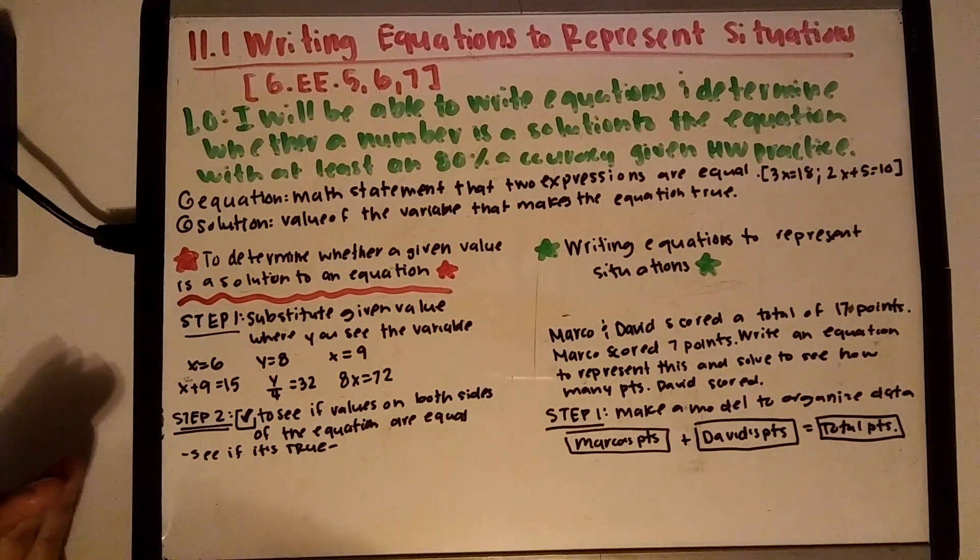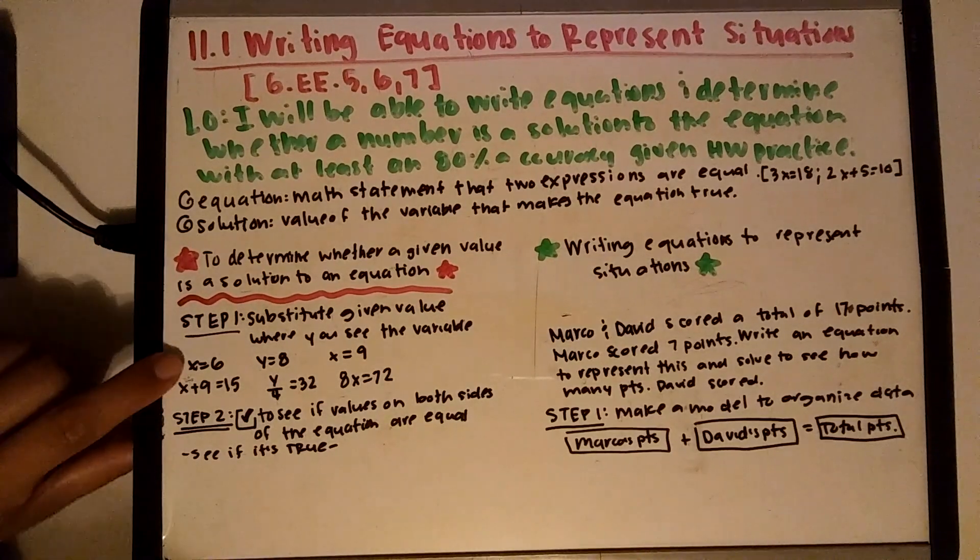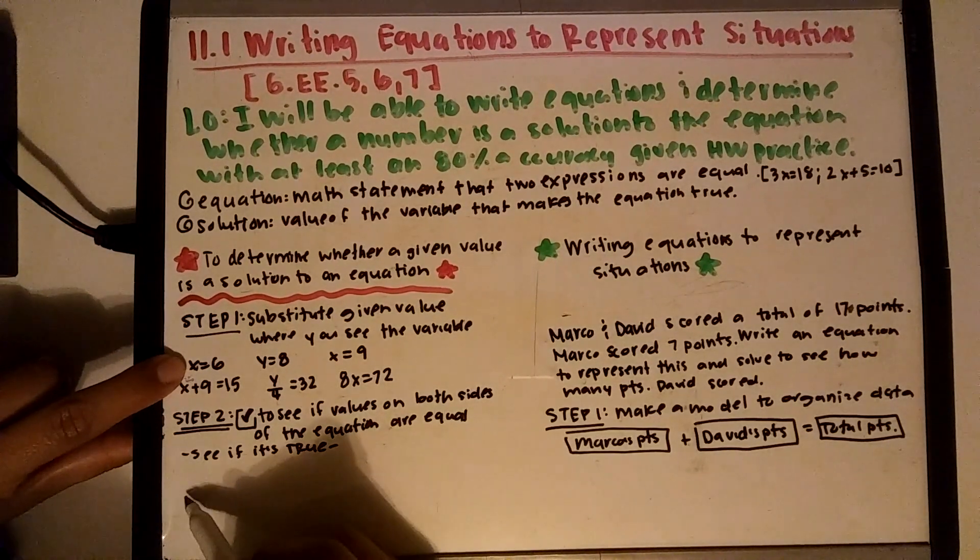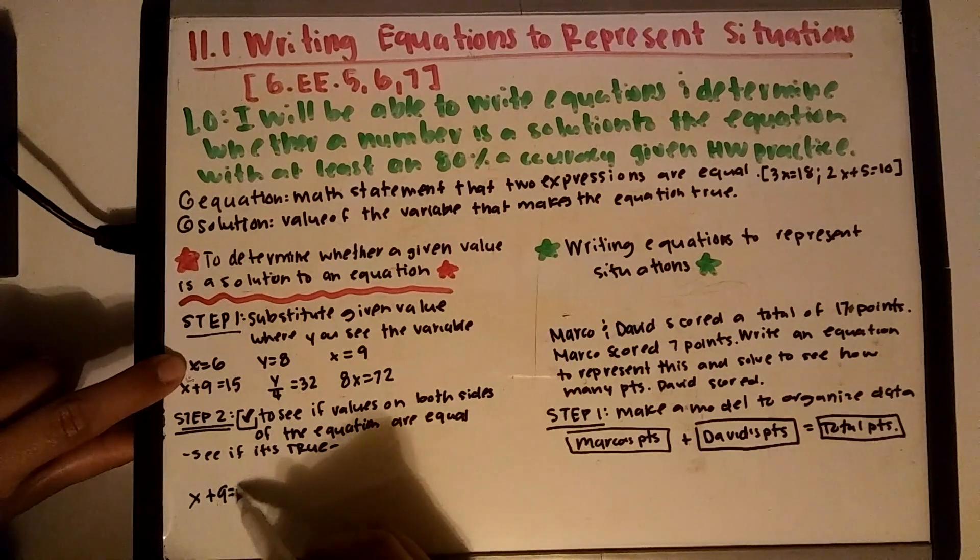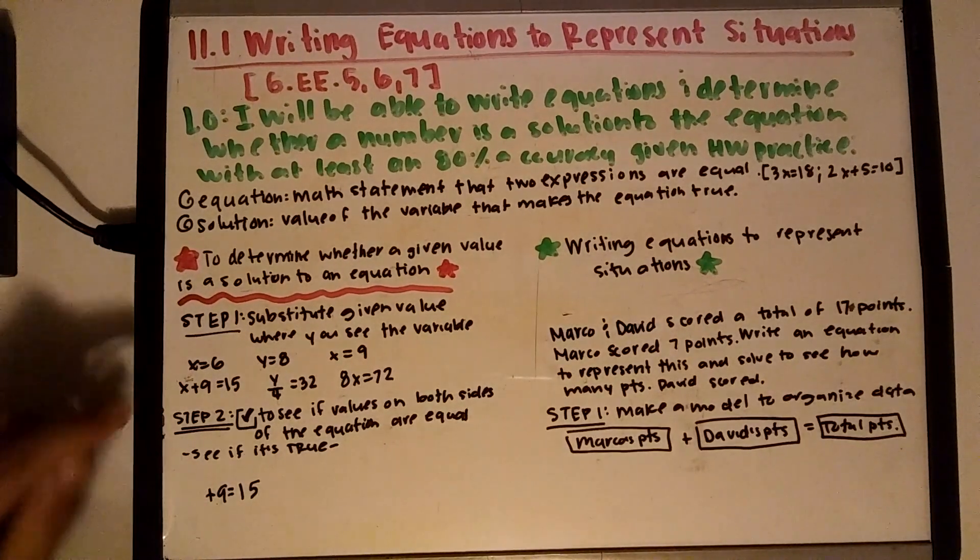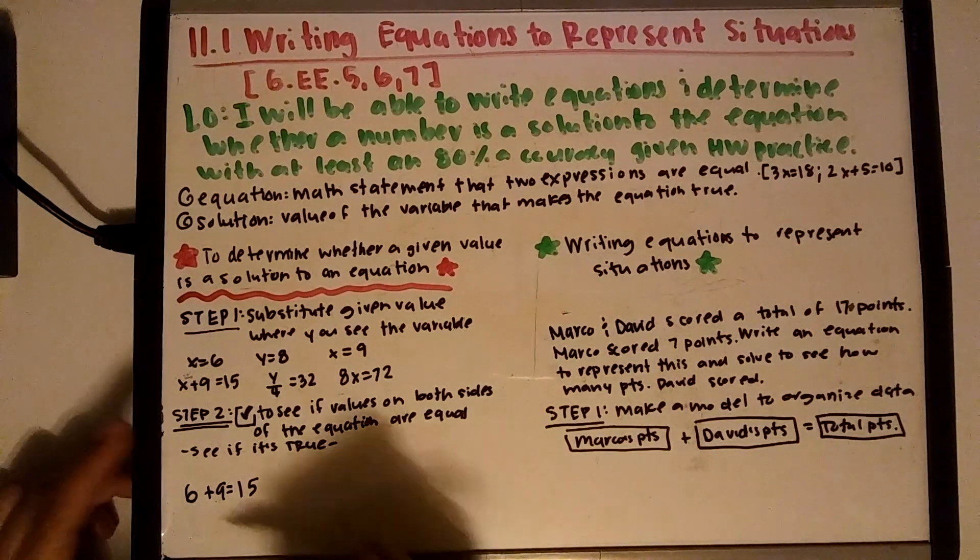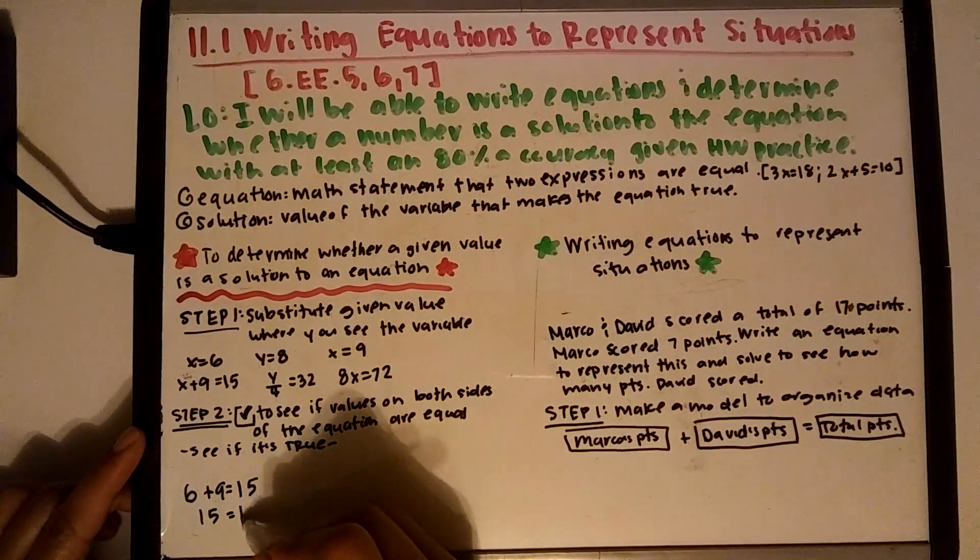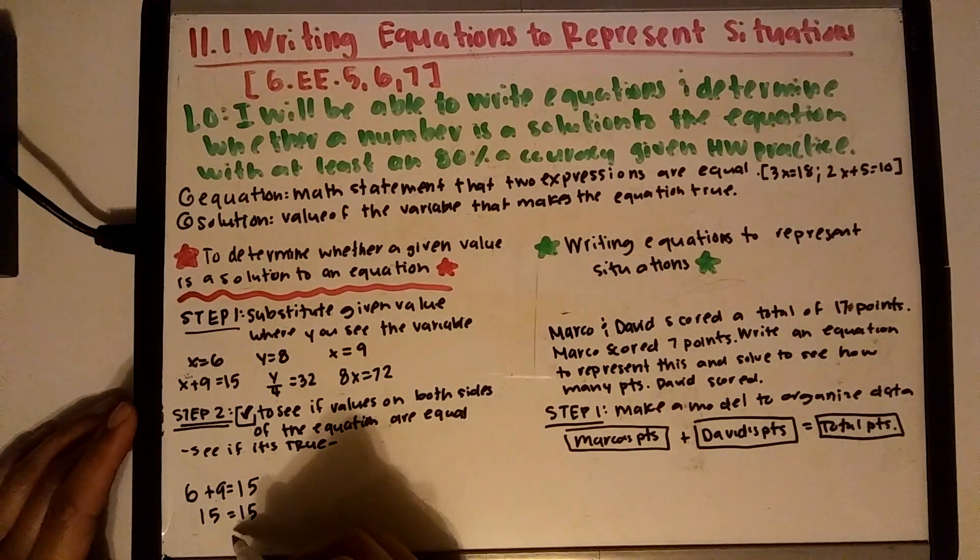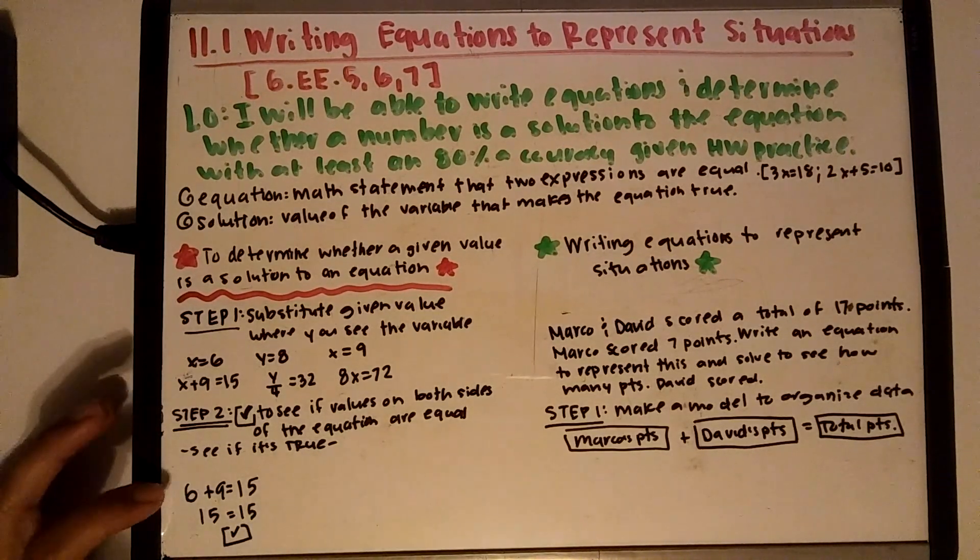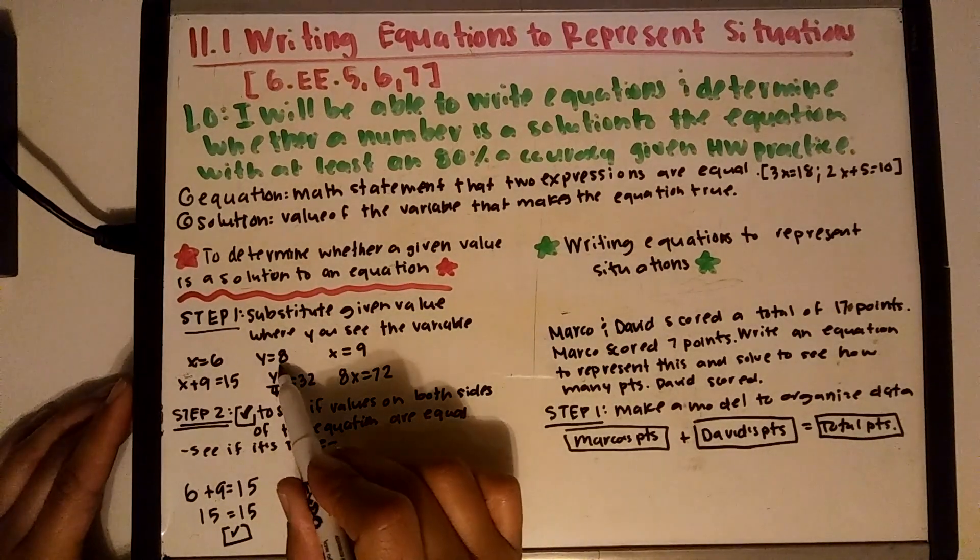After you do that, you're going to check to see if the values on both sides are equal to see if the statement is true. So let's check this one right here. Instead of writing x plus 9 equals 15, I'm going to erase my x there and write 6 because that's what it's asking me to check. So 6 plus 9 is 15, so it's true. 15 equals 15, yes, check. So this one works.